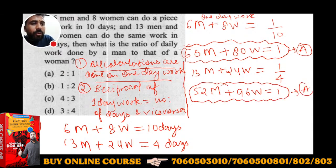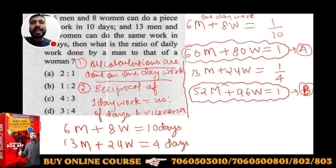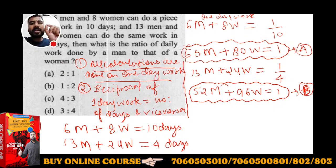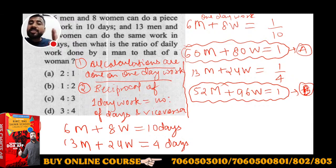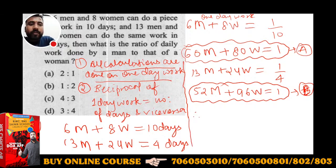In दोनों equations में, Equation A और Equation B के right hand side दोनों 1 हैं। जिसके right hand side same हो, उनके left hand side भी same होंगे। For example, if A = 2 and B = 2, then A = B. उसी तरह, 60M + 80W = 1 और 52M + 96W = 1, तो दोनों के left hand sides को equate कर सकते हैं।